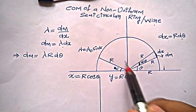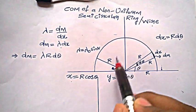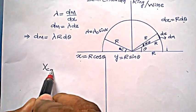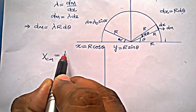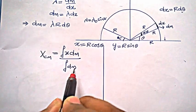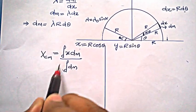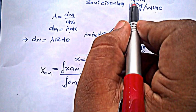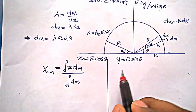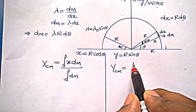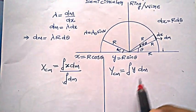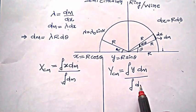Since it is a non-uniform semicircular ring or wire, we don't know for sure where the center of mass lies — it could be on the y-axis, on the x-axis, or anywhere. So we need to evaluate both integrals: x_cm = ∫x dm / ∫dm and y_cm = ∫y dm / ∫dm. We must also integrate the denominator since it is non-uniform.